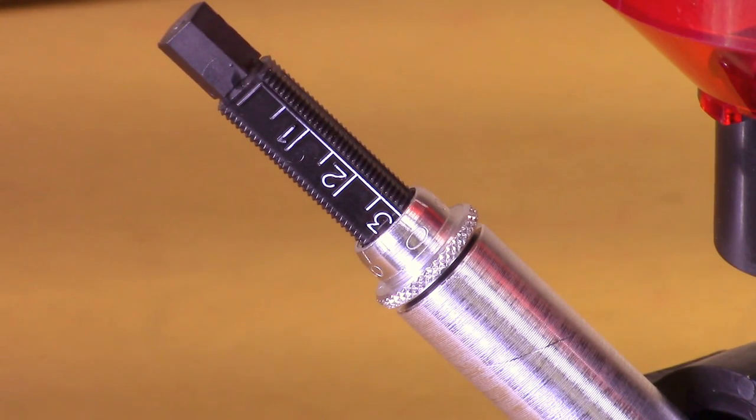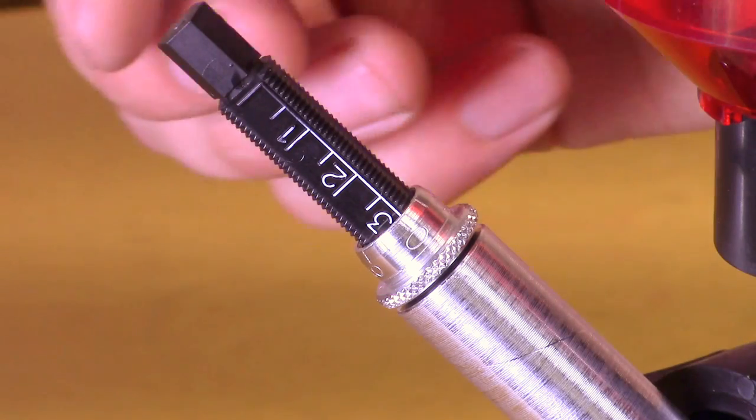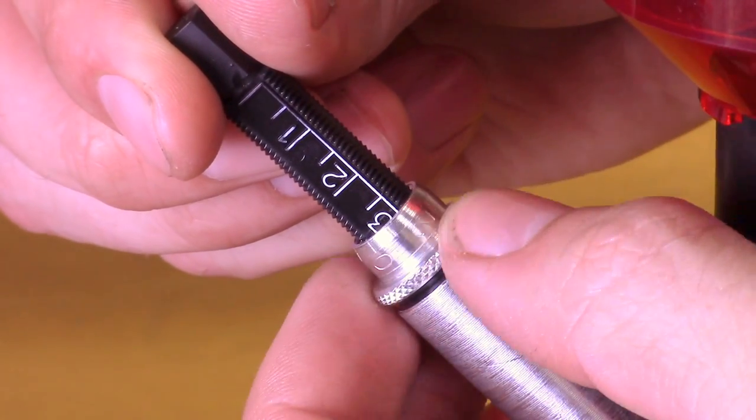Setting the micrometer on the Lee Perfect Powder Measure. Loosen the thimble so that the metering rod can be turned freely to any setting you desire.